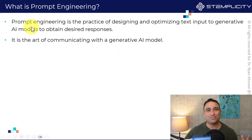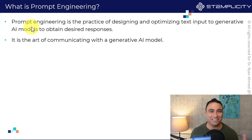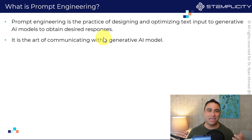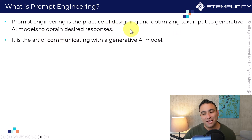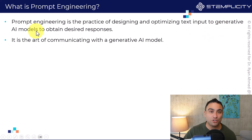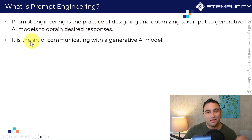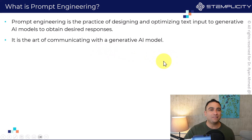Three years ago, no one even knew what a prompt or prompt engineering was. This term started to pop up after ChatGPT became mainstream and AI became popular, and everyone started using artificial intelligence. The idea of prompt engineering is the practice of designing and optimizing text input to a generative artificial intelligence model, or an LLM, to obtain desired responses. It is simply an art of communicating with the generative AI model.